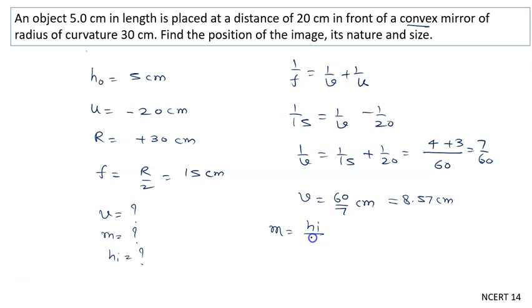Magnification is the height of the image upon height of the object, equal to -v/u. So height of the image upon height of the object (5 centimeters) equals -v (we calculated it as 60/7), and u is -20.